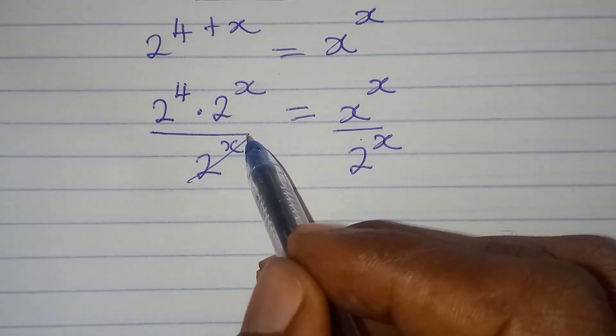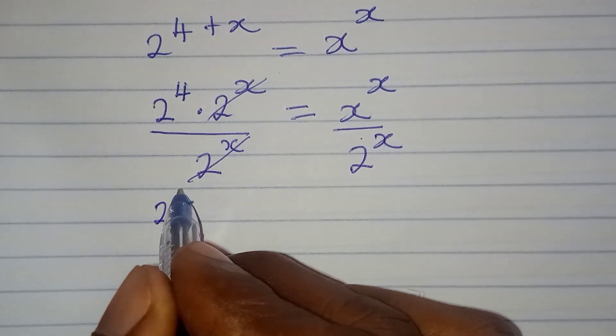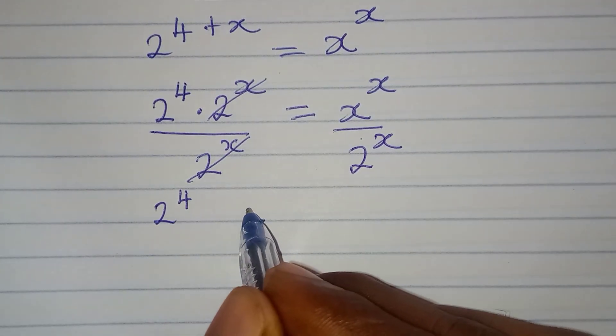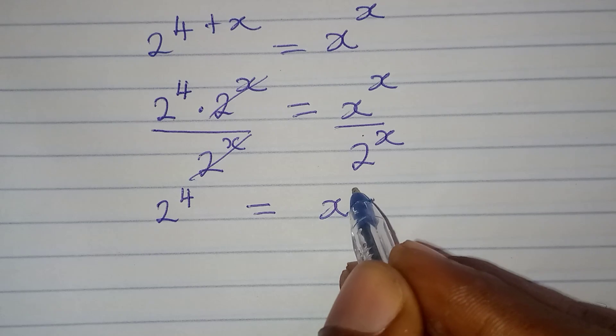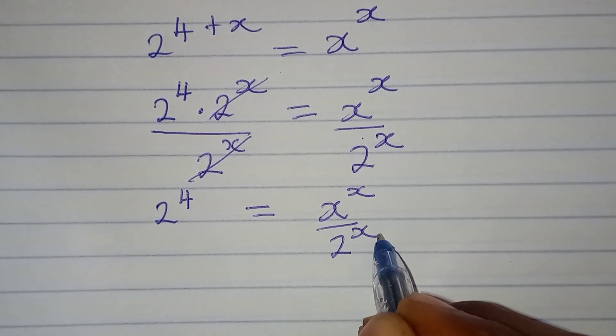Now, 2 to the power of x can cancel 2 to the power of x, and we have 2 to the power of 4 on this side, which is equal to x to the power of x all over 2 to the power of x.